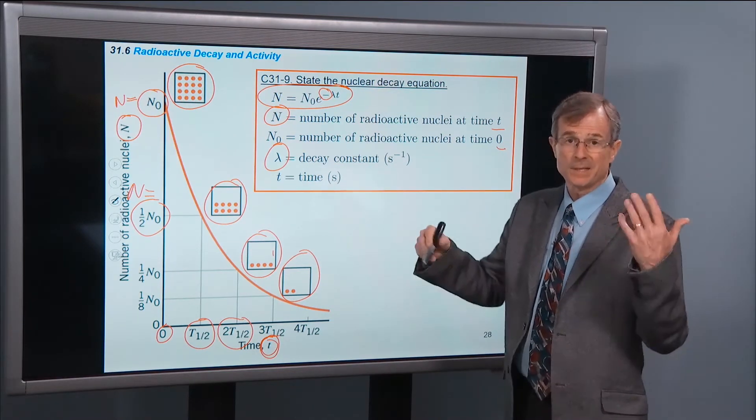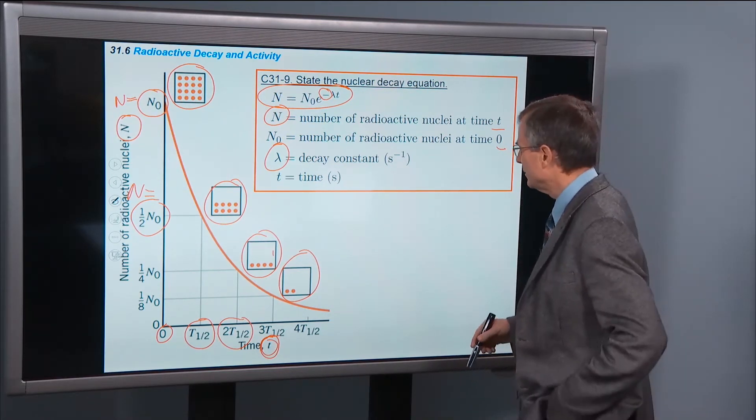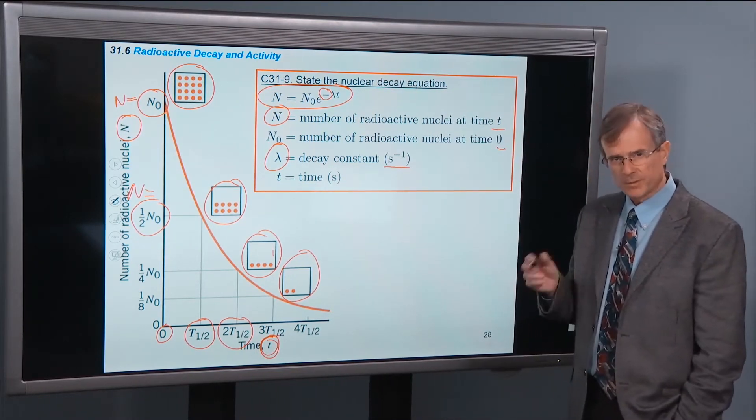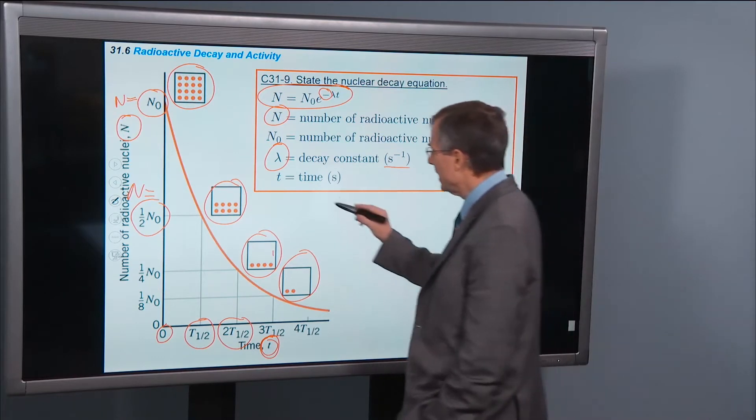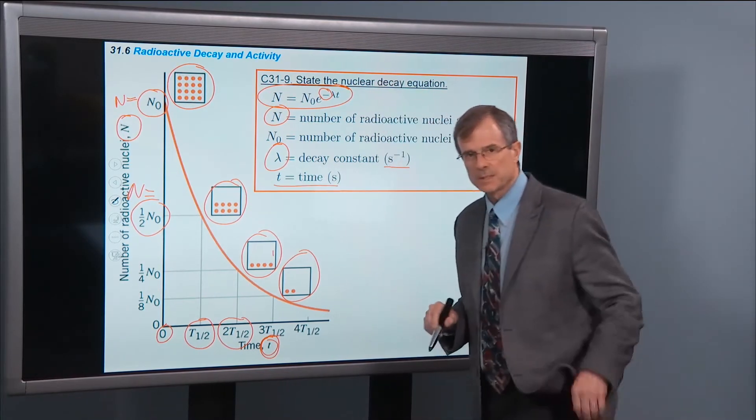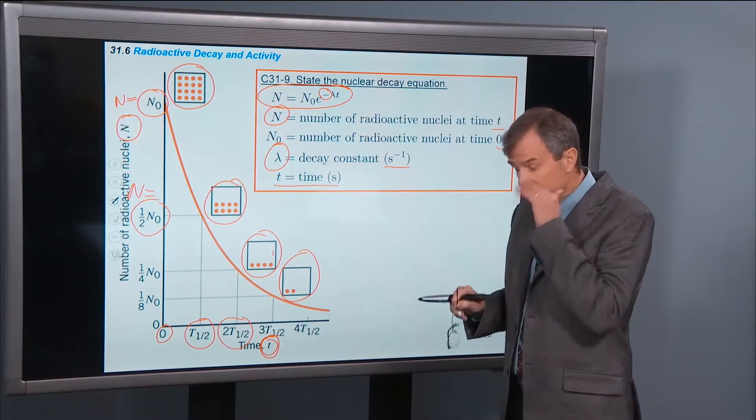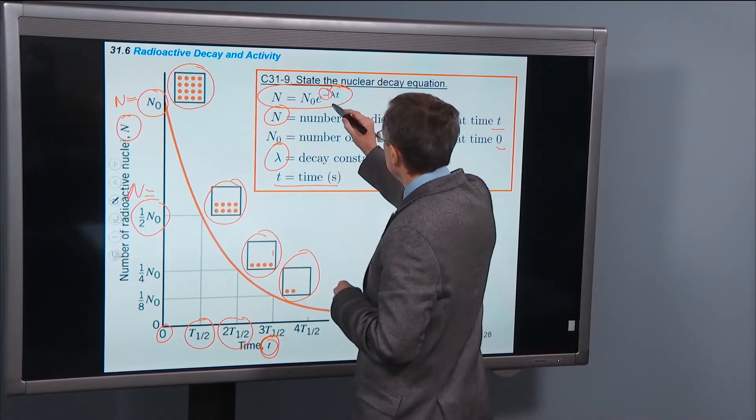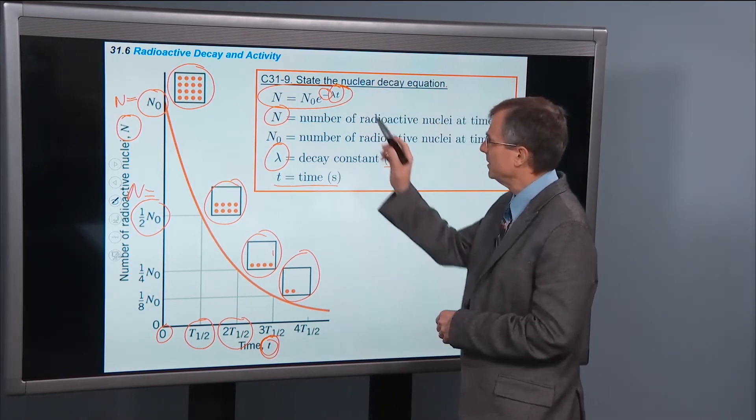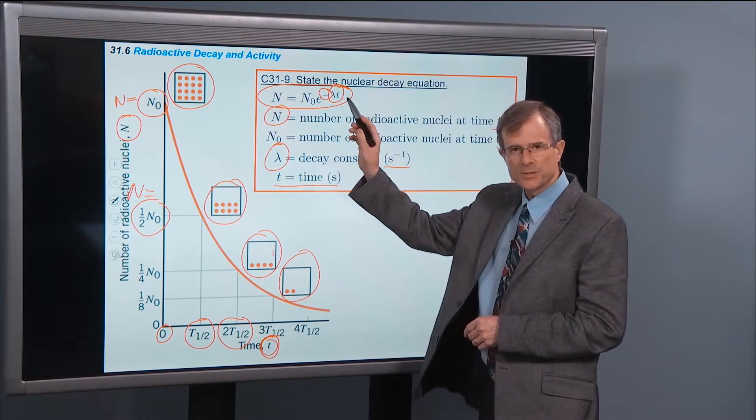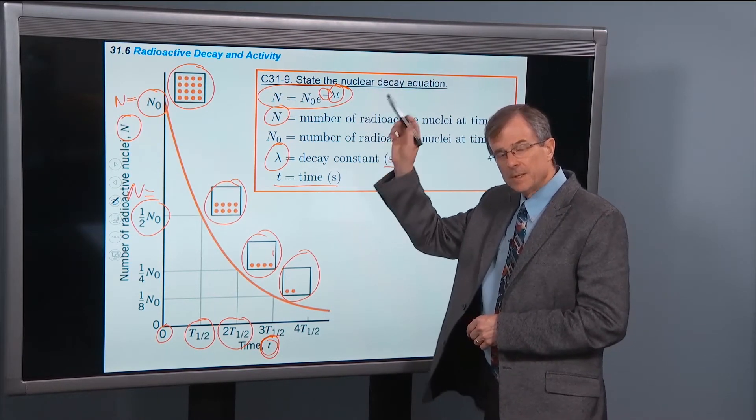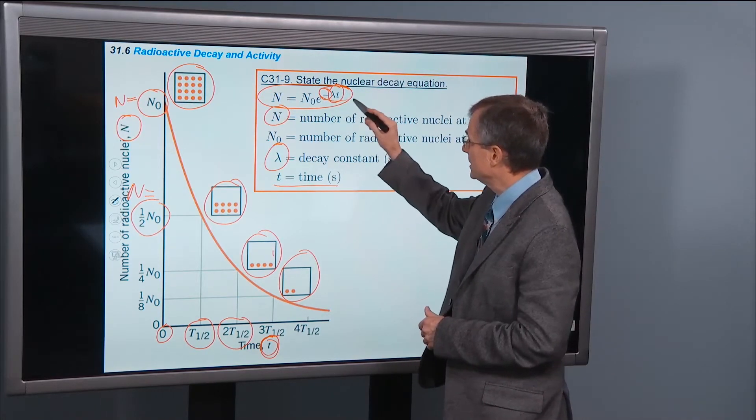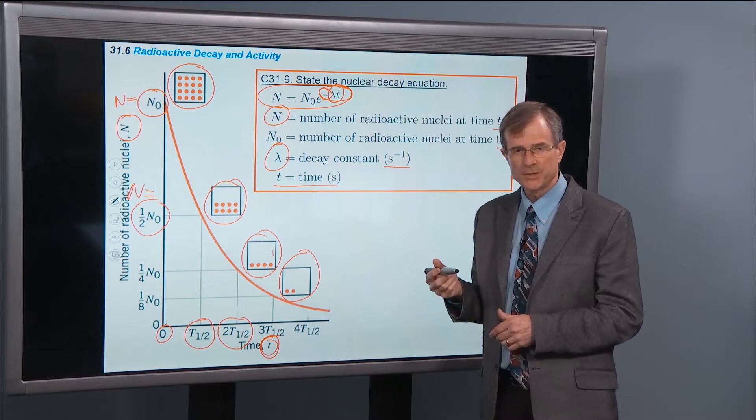The decay constant has units of inverse seconds, 1 over seconds. And the time, as usual, has units of seconds. So when you multiply lambda by t, t is measured in seconds, lambda is measured in inverse seconds. Then the seconds cancels the inverse seconds, and you have a minus lambda t that doesn't have any dimensions.